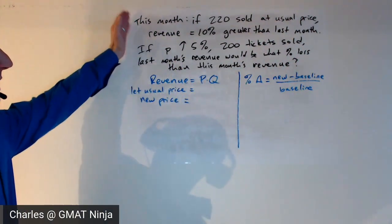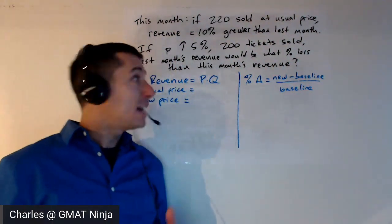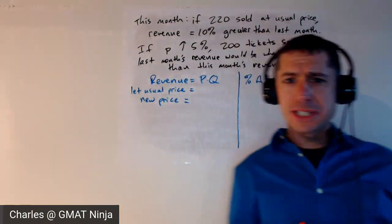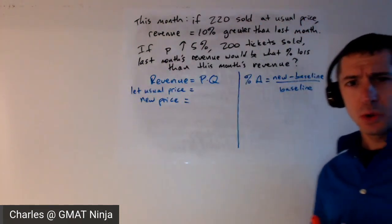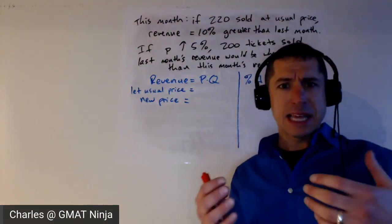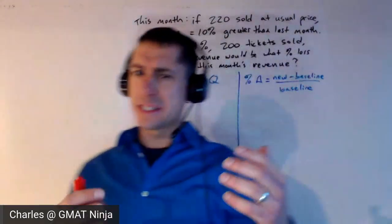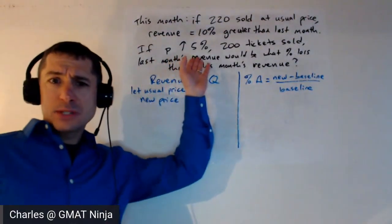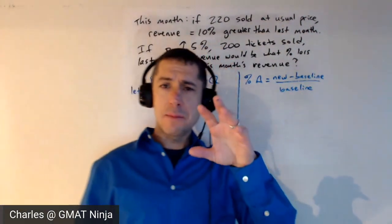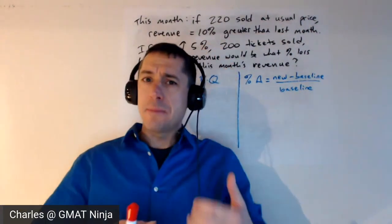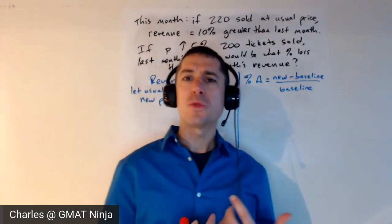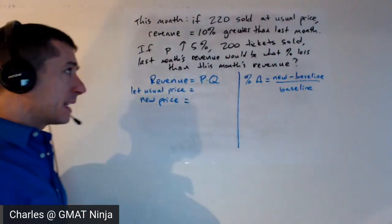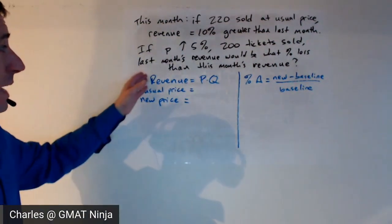Running through this question: we've got 220 sold at the usual price and the revenue would be 10% greater than last month. And if the revenue had gone up by 5%, then 200 tickets would be sold. We need the percent difference between last month and this month's revenue at that 5% increase. Now notice you've got a problem-solving question with a bunch of percents in it. This is one of those cases where picking numbers is quite a bit easier than doing algebra. Let's start breaking this down.